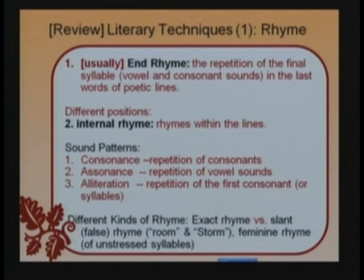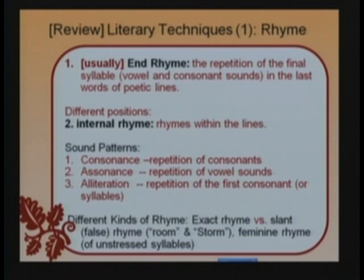有人說那個壓前面的子音，第一個子音，就是頭韻。甚至有人說壓第一個子音，然後一個字的中間同樣的子音也算是頭韻，所以它有一些variation。基本上你大概就記住alliteration是頭韻，它通常的聲音效果非常清楚，一聽就聽出來，因為它是在第一個音節就聽得清楚。(Some say alliteration covers the first consonant; some even include the same consonant mid-word. Basically remember that alliteration is head rhyme — its sound effect is very clear because it's heard at the first syllable.)